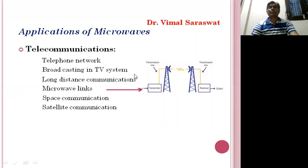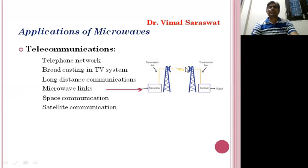This is a block diagram of microwave links. This is the transmitter, this one is the receiver, this is the transmitting antenna, this one is the receiving antenna, and between these two antennas there is the microwave signal.